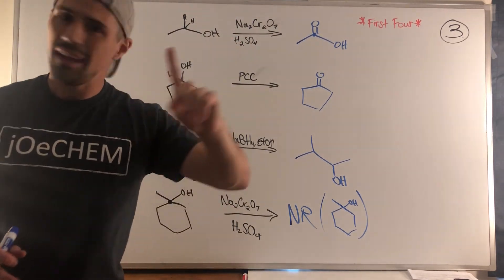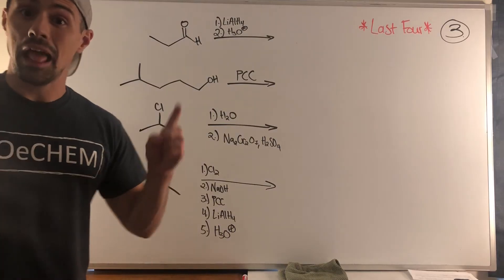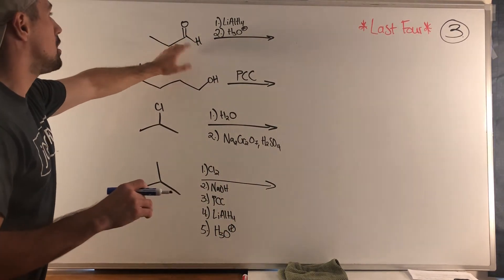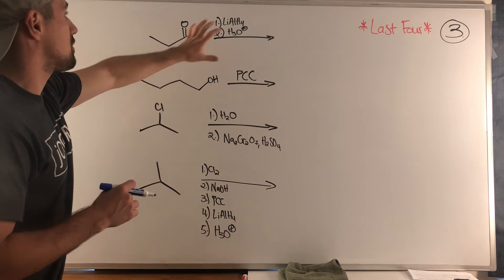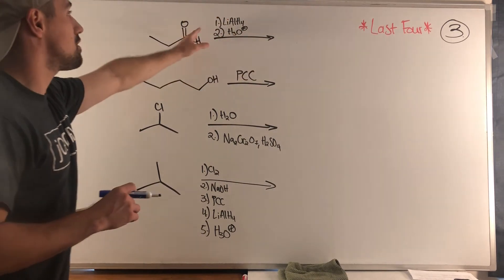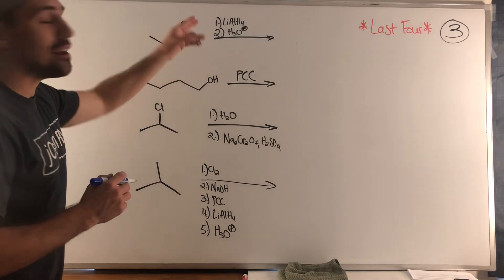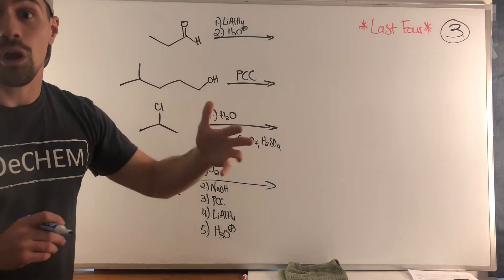Looking at this problem we have an aldehyde with the conditions for a reduction - lithium aluminum hydride with acidic workup. That'll just bump this aldehyde down to the primary alcohol it probably came from - the primary alcohol.